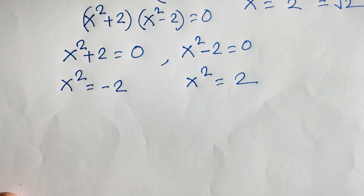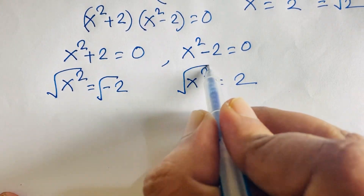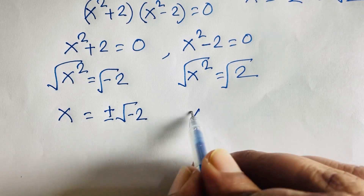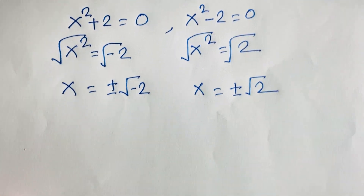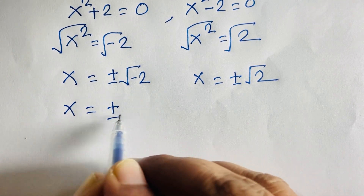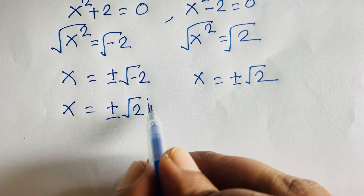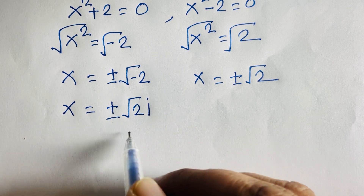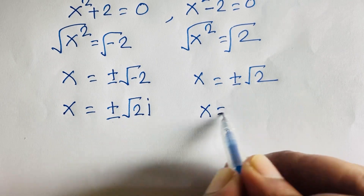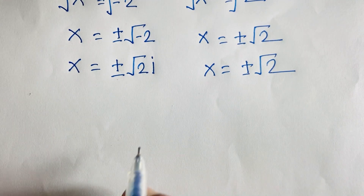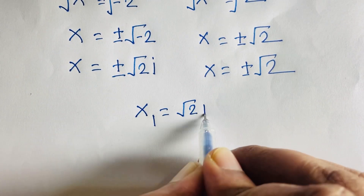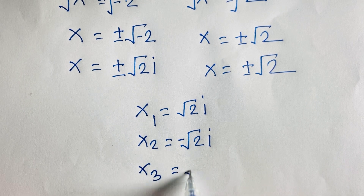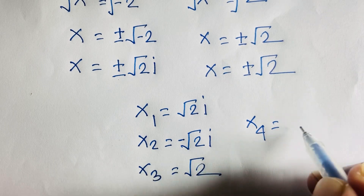If I use square root on both sides, x is equal to plus or minus square root of minus 2, and x is equal to plus or minus square root 2. Since i is equal to square root of minus 1, we have plus or minus square root of minus 2 equals plus or minus square root 2 times i. So the four values are: x1 is equal to square root 2i, x2 is equal to negative square root 2i, x3 is equal to square root 2, and x4 is equal to negative square root 2.